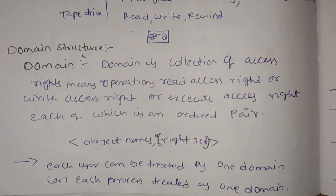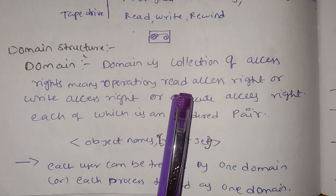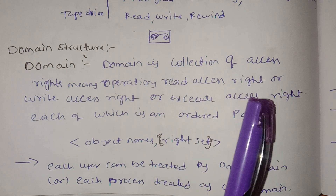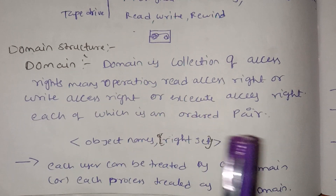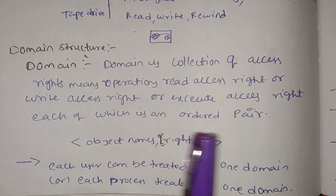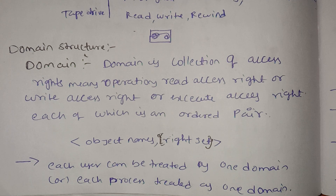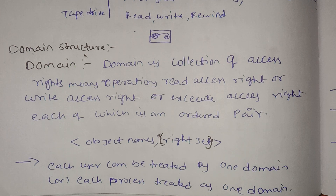A domain is a collection of access rights — operations such as read, write, and execute. Each access right is an ordered pair. So a domain is a collection of access rights like read, write, and execute operations.